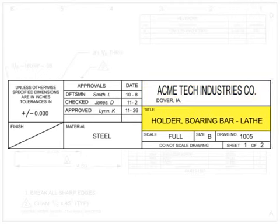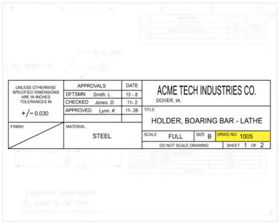The drawing title block can also be called the noun or nomenclature. A short description of what the item depicted, or the name of the part, is typically located in this block. The drawing number gives the drawing a unique identifier as a standalone document. Older drawings sometimes use the part number as the drawing number.